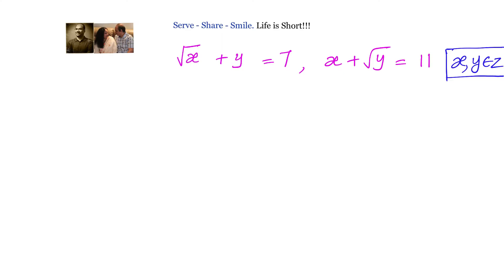Hello friends, welcome back. Let's look at this interesting problem — we have to solve for values of x and y. We've been given that √x + y = 7 and x + √y = 11. We can solve this problem in more than one method; we will look at a couple of them.